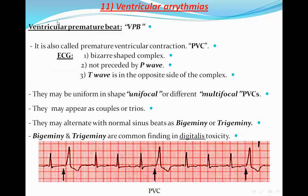Ventricular premature beats — also called ventricular extrasystoles or premature ventricular contractions (PVCs) — appear on the ECG as bizarre-shaped, wide complexes that are not narrow like the normal sinus beats. They are not preceded by a P-wave because they originate from the ventricle, and the QRS complex is opposite in direction to the T-wave. These are the criteria to diagnose a PVC: bizarre-shaped complex, not preceded by a P-wave, and the complex is in the opposite direction to the T-wave. PVCs may be unifocal — the same shape in the same lead.